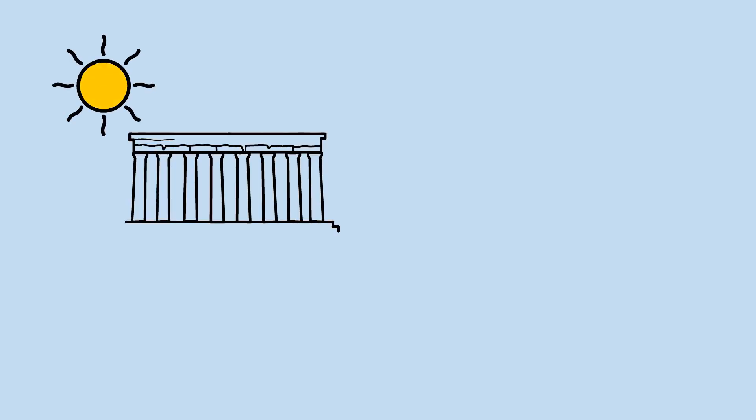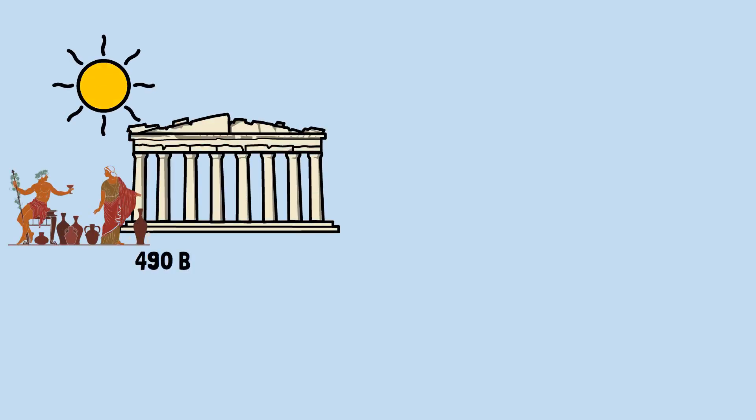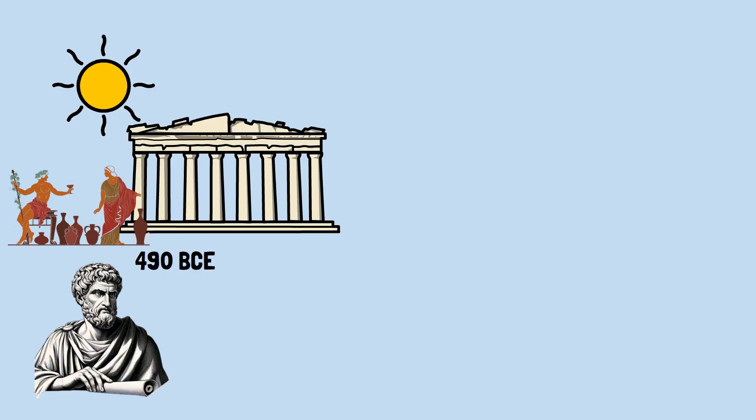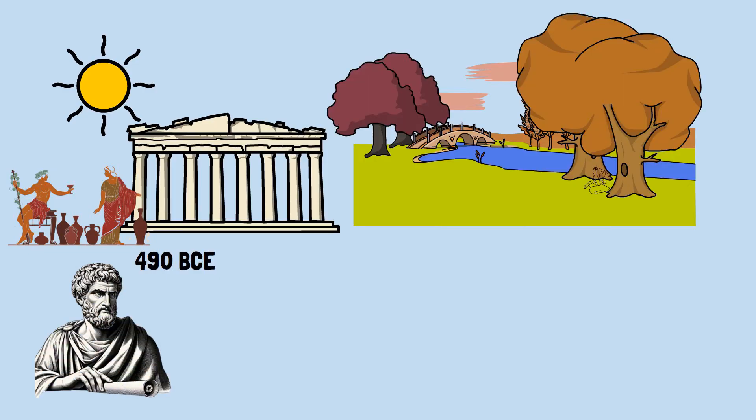It's a blazing hot afternoon in ancient Greece around 490 BCE. A brilliant young philosopher named Zeno sits in the shade of a tree watching a tortoise slowly make its way across the courtyard. What begins as idle observation is about to become one of the most mind-bending challenges in all of mathematics.